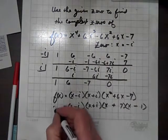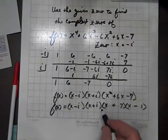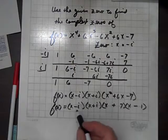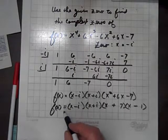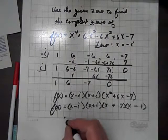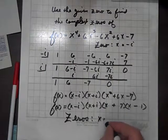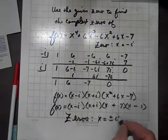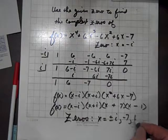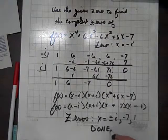So, this is the polynomial written in terms of linear factors. The zeros are x equals plus or minus i, negative 7, and 1. And we are done. Thank you.